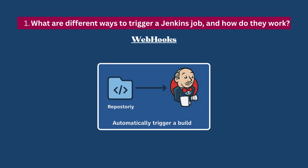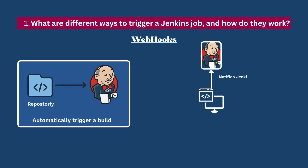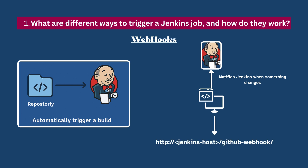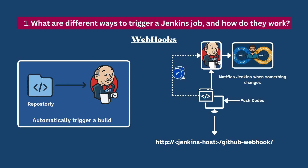Webhooks — this is a more efficient and instant approach. Instead of Jenkins pulling the repo, the repo like GitHub or GitLab notifies Jenkins when something changes, like a push to the main branch. You set this up on the repository side by adding Jenkins' webhook URL. And once configured, as soon as someone pushes code, Jenkins gets a ping and starts the pipeline right away. This is faster and cleaner than Poll SCM because there's no constant checking in the background.